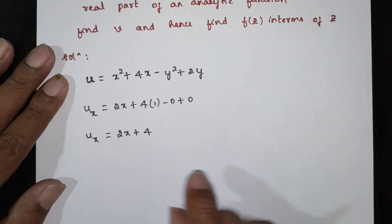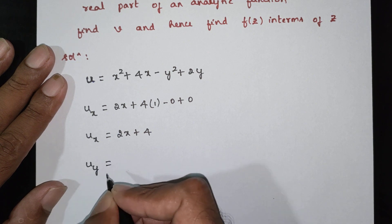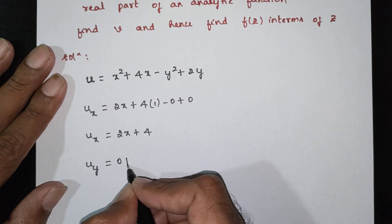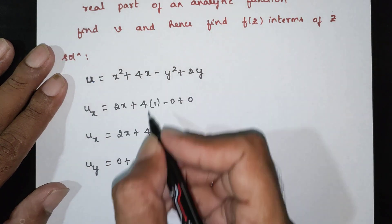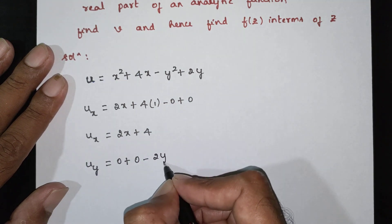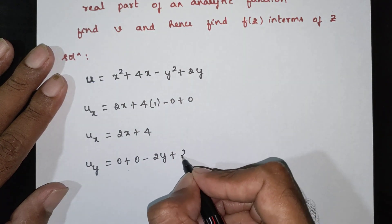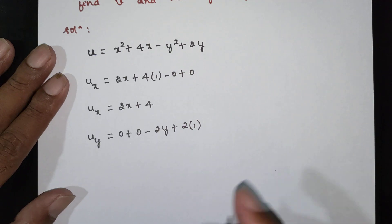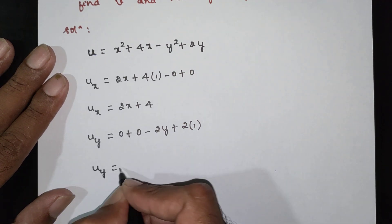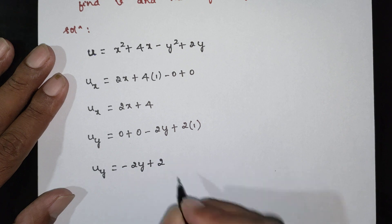Next, find uy — the partial derivative with respect to y. The x terms give 0, negative y squared differentiates to negative 2y, and 2y differentiates to 2. So uy is equal to negative 2y plus 2.